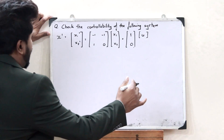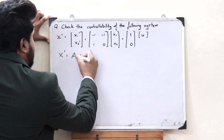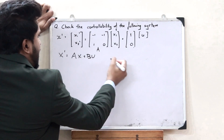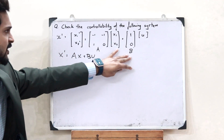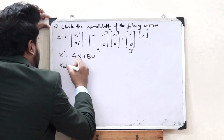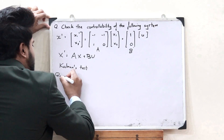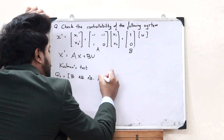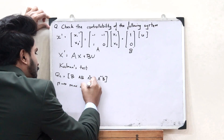The first thing we must observe is that this is of the form x' = Ax + Bu, where this particular matrix is simply A and this particular matrix is simply B. So we have matrix A and matrix B. Now, according to Kalman's test from the previous video, we must first formulate a matrix QC, which is equal to [B, AB, A²B, ..., A^(n-1)·B], where n is the maximum order of these matrices.